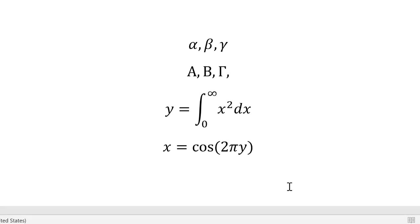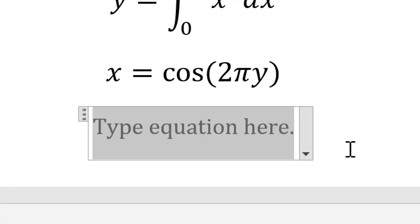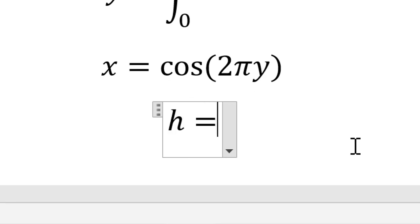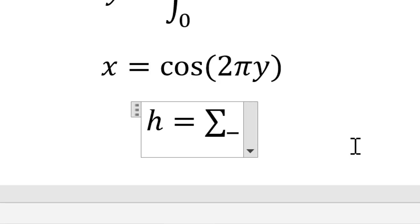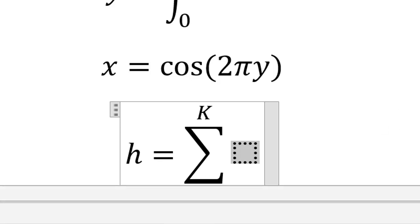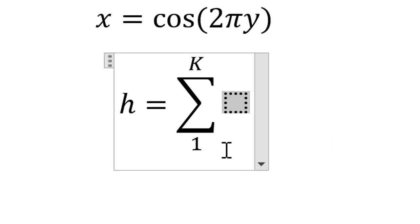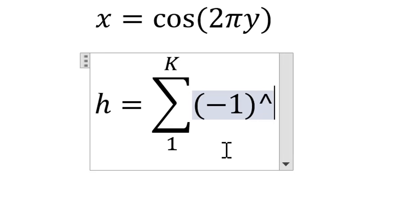For example, if we are interested in writing an equation containing this summation, that will be again by using similar procedure. So h equals. For summation we will write backslash sum. And the lower limit after underscore, that is for example 1. And the upper limit is let's say capital K. So you see, this is the converted summation. And inside summation, for example, I want to write minus 1 raised to power k. So that is your equation.